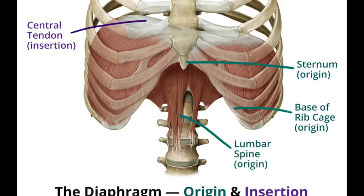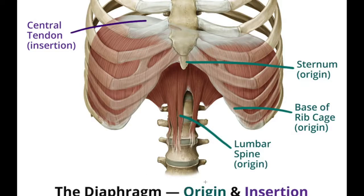On the lateral side of the crura, the diaphragm arises from the medial and lateral arcuate ligaments. Finally, the diaphragm is inserted into the central tendon, which is clover-leaf shaped with three leaves, as you can see in the picture.